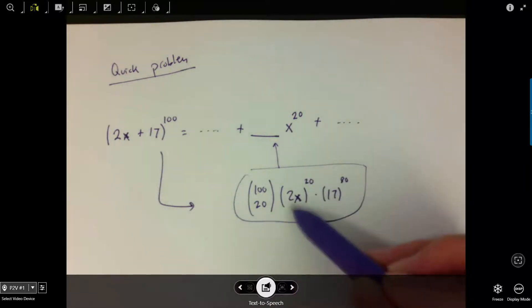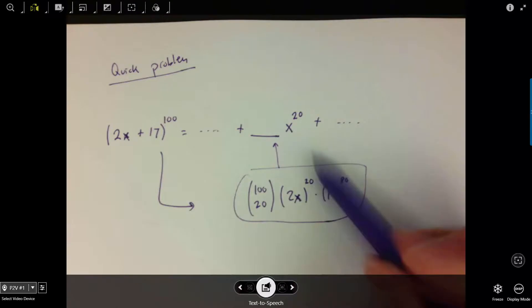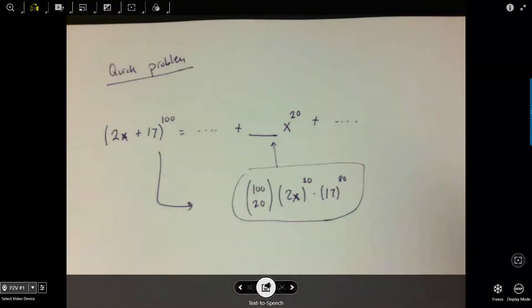So that 2 to the 20th is going to become part of this coefficient, and the 17 to the 80th is going to become part of the coefficient.